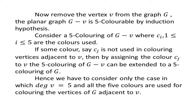Suppose some color Cj is not used in coloring the vertices adjacent to V. Then by assigning the color Cj to the vertex V, the five-coloring of G minus V can be extended to a five-coloring of G. Hence we have to consider only the case in which the degree of V equals five and all five colors are used for coloring the vertices of G adjacent to V.